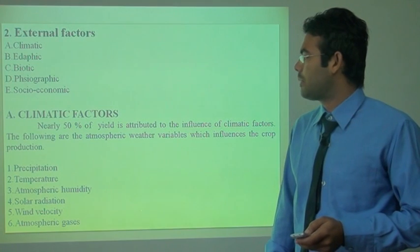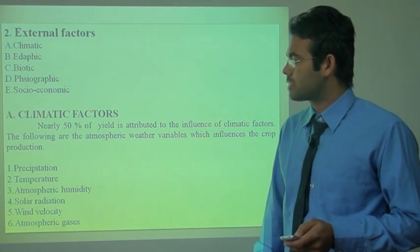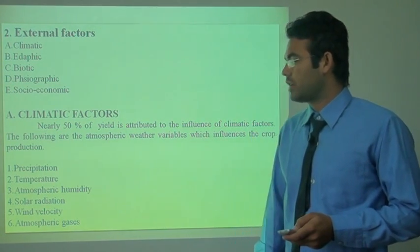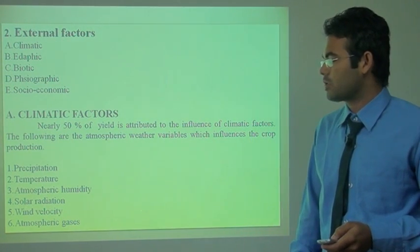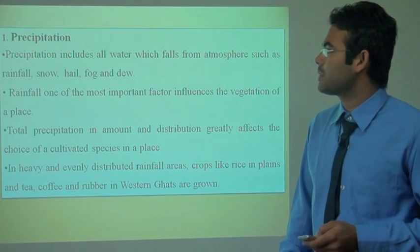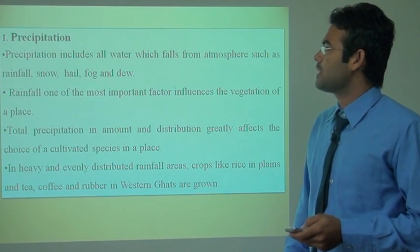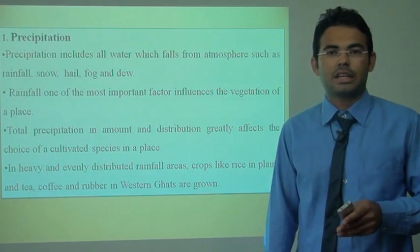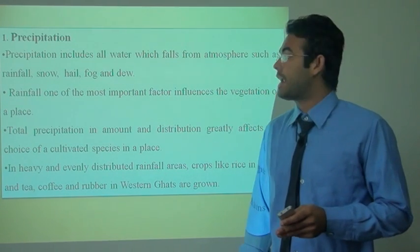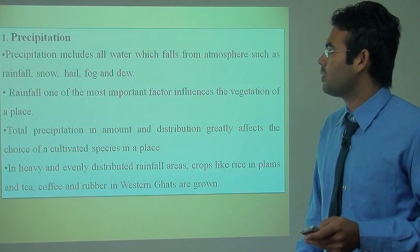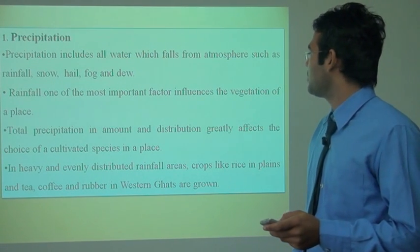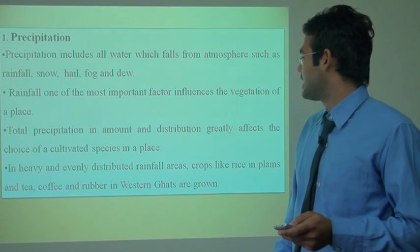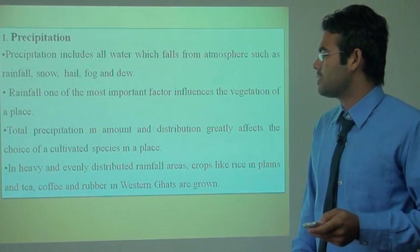In the climatic factor, there are six factors: precipitation, temperature, atmospheric humidity, solar radiation, wind velocity and atmospheric gases. The first is precipitation. Precipitation includes all water which falls from the atmosphere such as rainfall, snow, fog and dew. Rainfall is the most important factor influencing the vegetation of a place. Total precipitation in amount and distribution greatly affects the choice of cultivated species and plants.